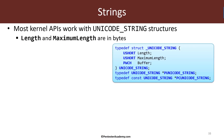So what about strings? Many kernel APIs require us to pass around strings. The kernel APIs mostly accept a particular structure called Unicode string, which represents a UTF-16 string. It has a length, a maximum length, and a buffer. The buffer points to the actual string of characters — it's a pointer to the actual characters.